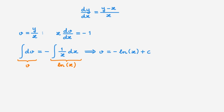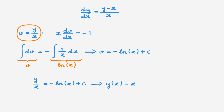But to really finish, we want to go back to y. Considering the definition v = y/x, we rewrite our solution as y/x = −ln(x) + c. As a final step, we can write y(x) = x(c − ln(x)). And this is our solution for the homogeneous differential equation.